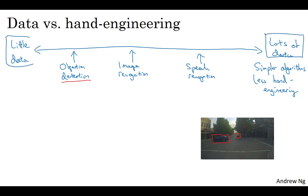Whereas in contrast, when you don't have that much data, then on average, you see people engaging in more hand engineering, and if you want to be ungenerous, you can say there are more hacks. But I think when you don't have much data, then hand engineering is actually the best way to get good performance.